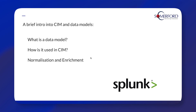In terms of normalization, data models also often include normalization and enrichment processes to enhance the quality and usefulness of the data. Normalization involves standardizing values or formats within specific fields, while enrichment involves adding additional context or metadata to the data, such as categorizing events or adding threat intelligence information.